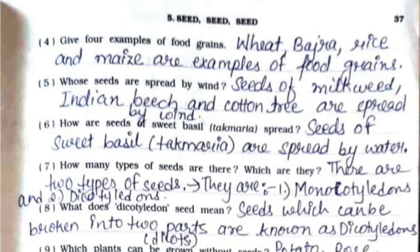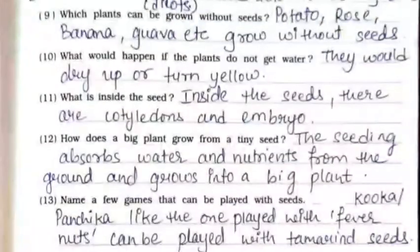Eighth: what does dicotyledon seed mean? Seeds which can be broken into two parts are known as dicotyledons. Ninth: which plants can be grown without seeds? Potato, rose, banana, guava, etc. grow without seeds. Tenth: what would happen if plants do not get water? They would dry up or turn yellow. Eleventh: what is inside the seed? Inside seeds there are cotyledons and embryo.